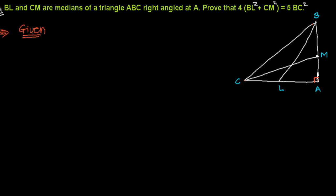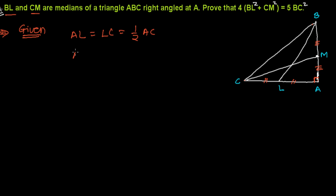Let's write the given information. BL and CM are medians. BL is the median, which means it divides AC into two equal halves, so AL equals LC equals half of AC. Similarly, CM is also a median, which means AM equals BM equals half of AB.